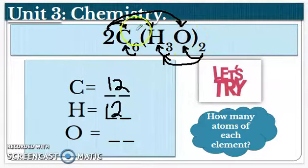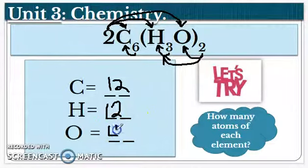And the last oxygen has a two coefficient and—sorry, a two subscript. So two times two gives us four oxygen atoms.